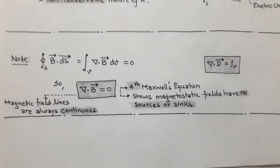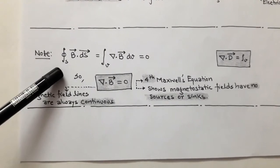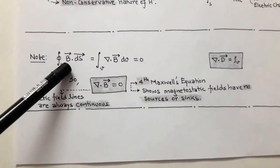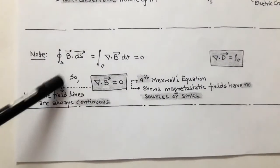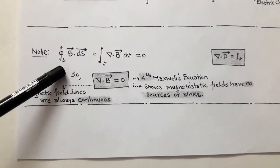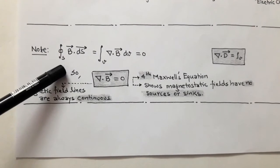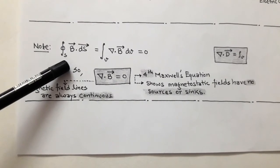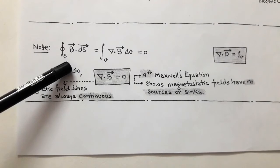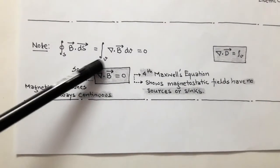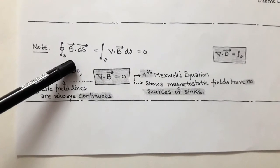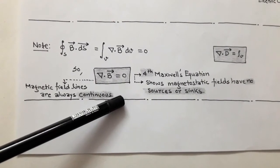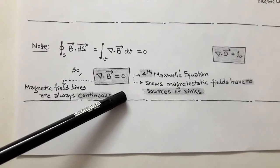Since the closed surface integration of B·dS equals 0, and any closed surface defines some volume, we can apply the divergence theorem. The divergence theorem relates closed surface integration to volume integration. Using the divergence theorem, the closed surface integration of B·dS equals the volume integration of divergence of B times dV, and this equals 0. From here, we get: divergence of vector B equals 0.